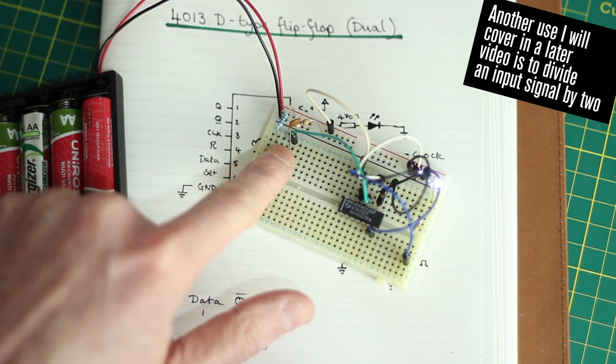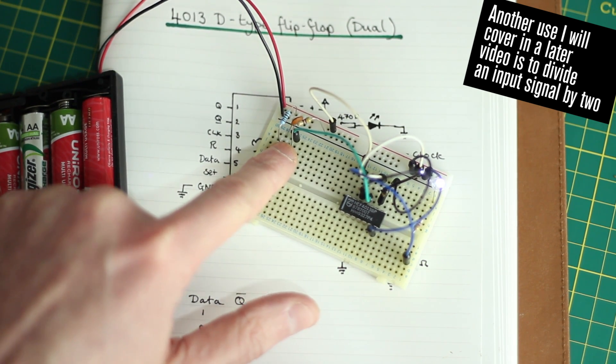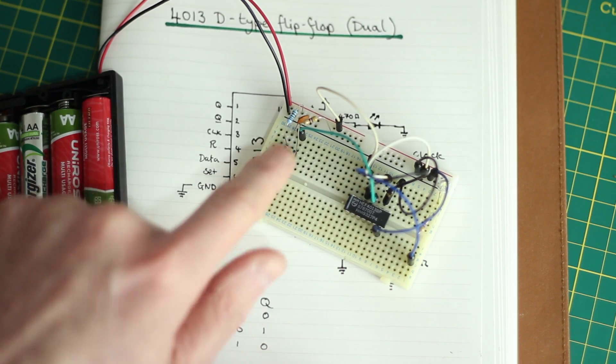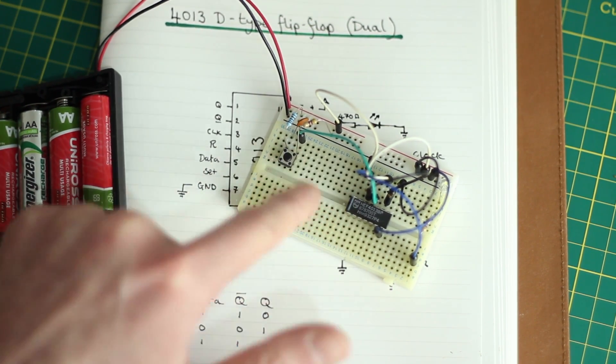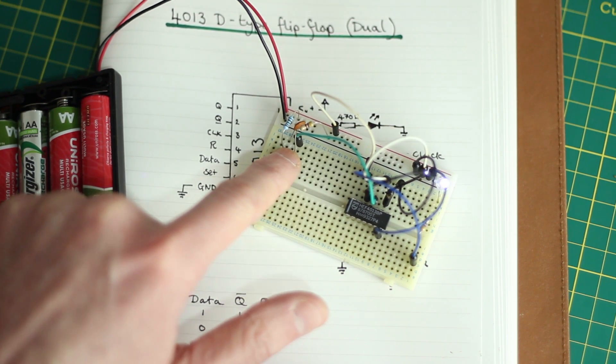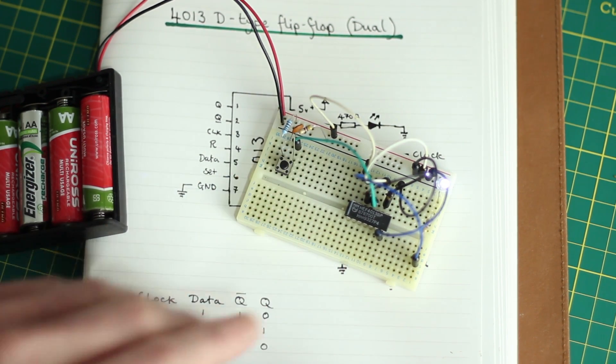But they're really nice little useful chips, certainly if you just want an on-off switch like that. And it's latching, so you know when you press the button it's going to come on. And you've got two on here, so it's quite useful if you wanted to have two different states to alternate between.